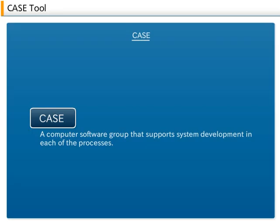CASE — Computer Aided Software Engineering — is a computer software group that supports system development in each of the processes. In other words, each type of method, programming, text, maintenance, and so on that are used for each process is supported by the computer. However, it should be noted that structured method is assumed as a prerequisite.